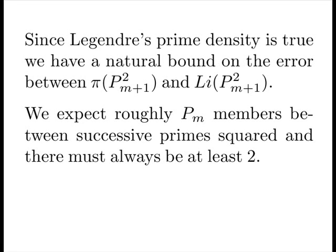Since Legendre's prime density is true, we have a natural bound on the error between our prime counting function and the backbone. At the next prime squared, we expect roughly the current prime members between successive primes, and there must always be at least two.